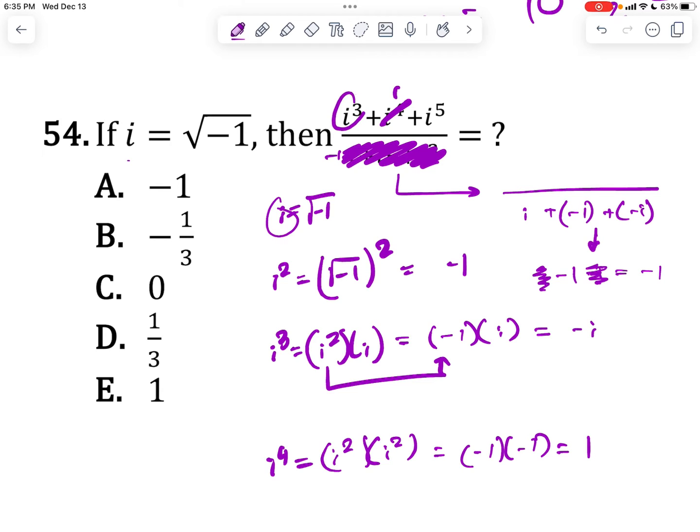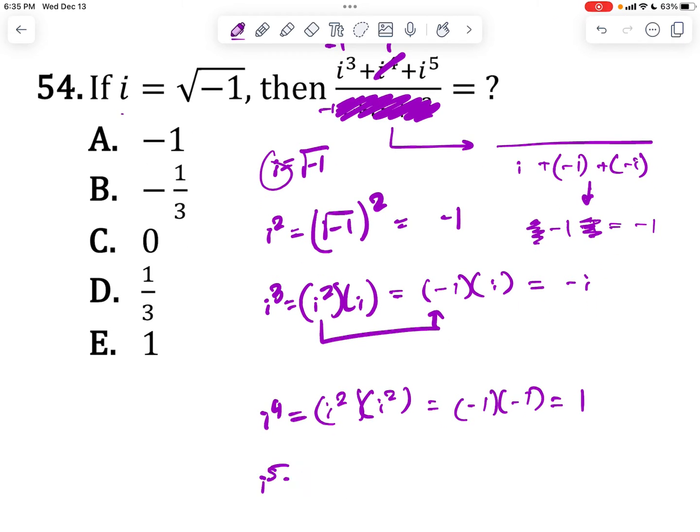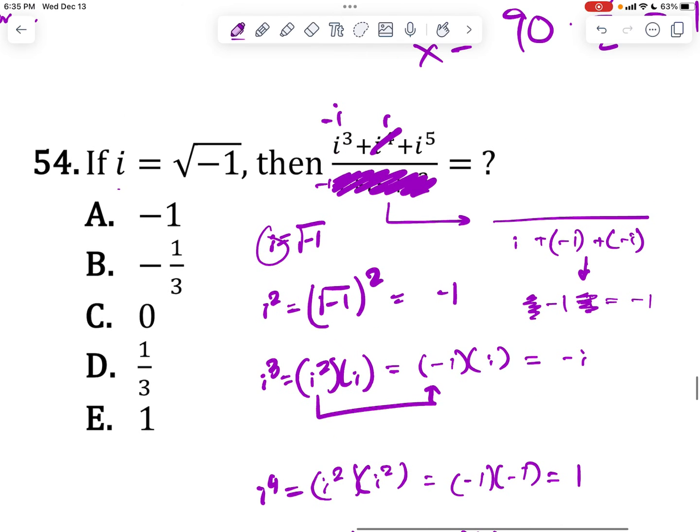So 1. I already know i to the third. Just borrow that from here. It's negative i. i to the fifth, let's just call that i to the fourth times i, which is going to be 1 times i. That's equal to i. So negative i plus 1 plus i. That gives you 1. Again, this cancels out with that. So 1 on the top, negative 1 on the bottom. That gives you 1 over negative 1, which is equal to negative 1.